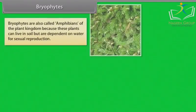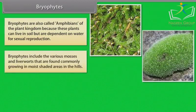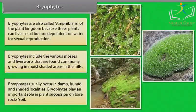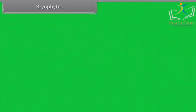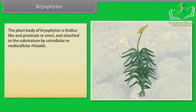Bryophytes are also called amphibians of the plant kingdom because these plants can live in soil but are dependent on water for sexual reproduction. Bryophytes include various mosses and liverworts commonly found growing in moist shaded areas in the hills. They usually occur in damp, humid, and shaded localities. Bryophytes play an important role in plant succession on bare rocks or soil. The plant body of bryophytes is thallus-like and prostrate or erect, attached to the substratum by unicellular or multicellular rhizoids.